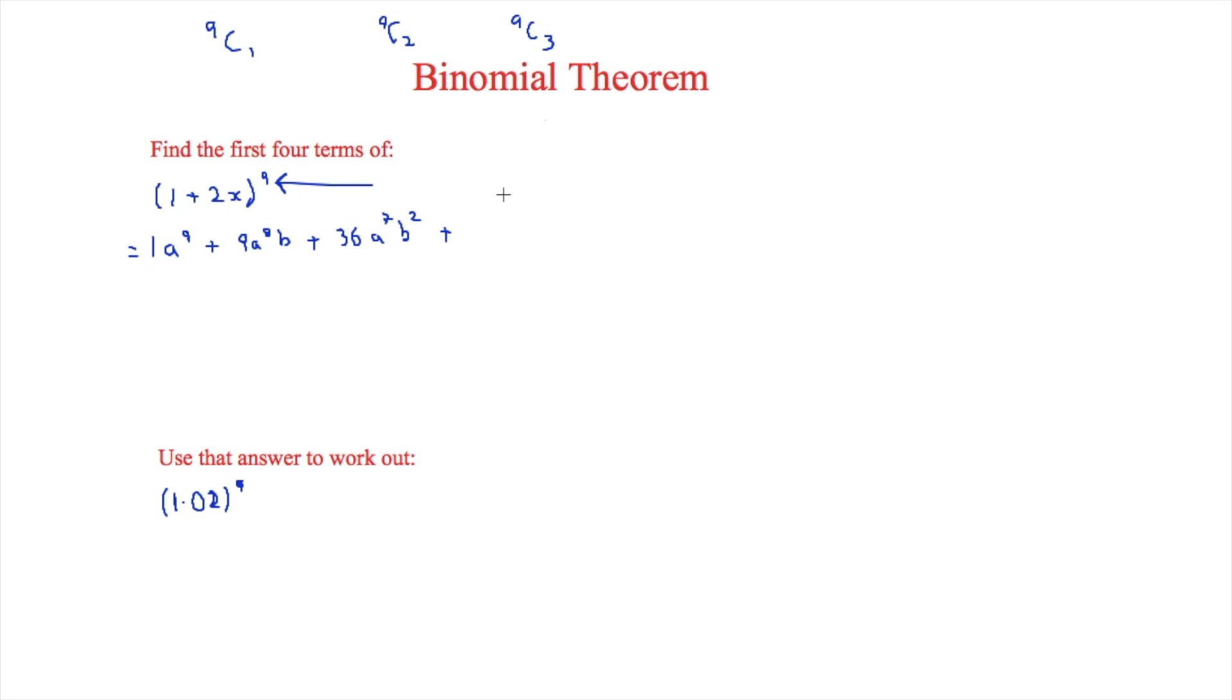And then the final term plus this is going to be nC3. And nC3 is equal to 84. So 84. Again a is decreasing by 1. So a to the 6. b is increasing by 1 each time. So b to the 3.